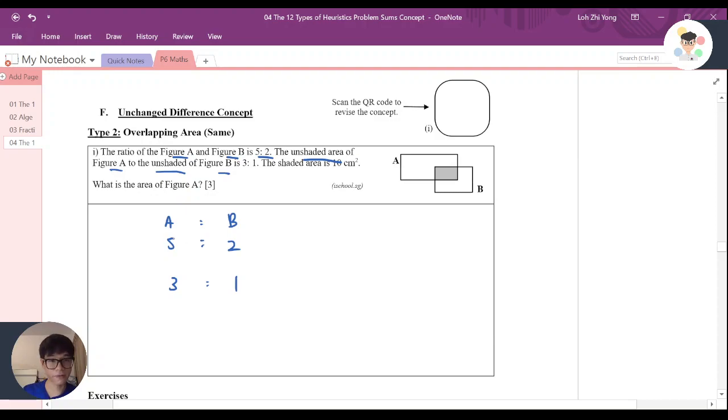Now, unshaded area is 10 cm². So basically, I can understand as I have 5 here, and because I minus away the shaded area, now what I left is the unshaded area of A. The same goes here. I have 2, but I have minus 10, and I become 1.